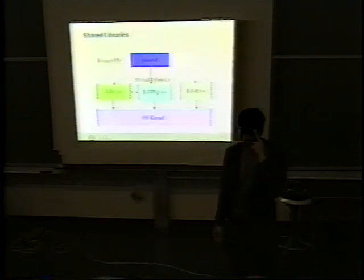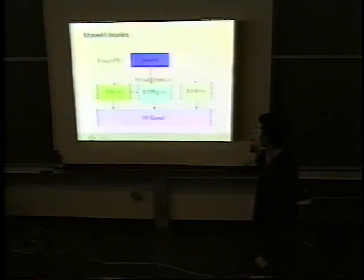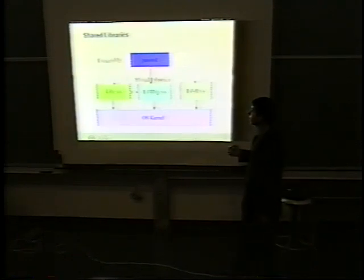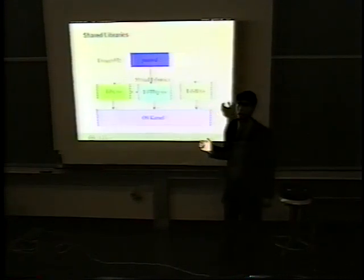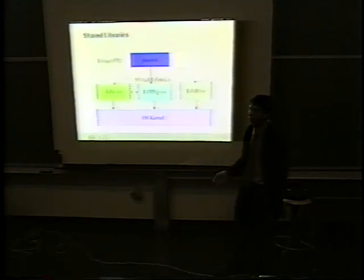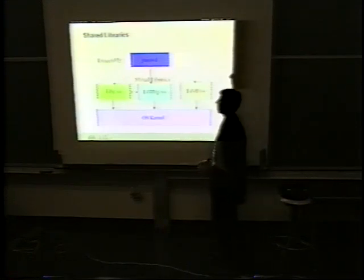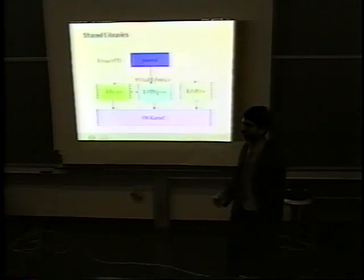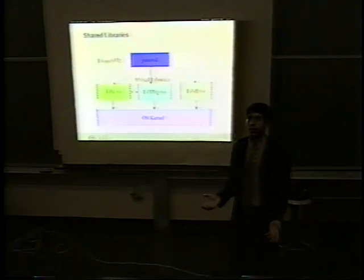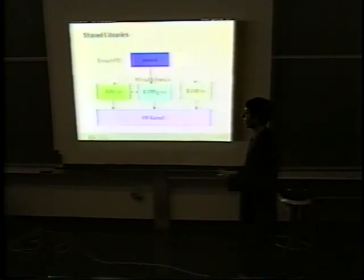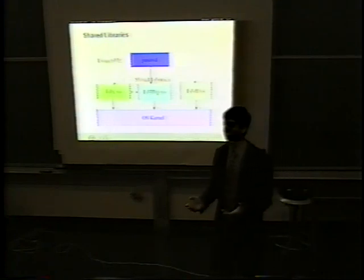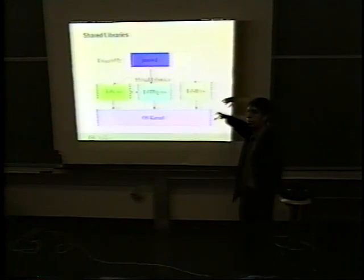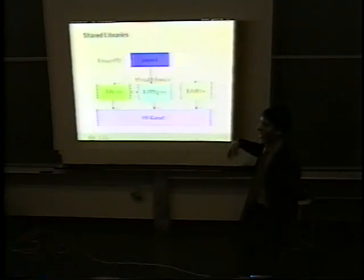Just to refresh on shared libraries — the example here is the password command, but it could be any other setuid program. Password loads several shared libraries: the dynamic link shared library, which handles shared libraries themselves; the LDAP shared library, which allows password to change your password on an LDAP server; and libc, which does almost everything for most Unixes — reading and getting environment variables, writing files, and so on. All of these talk directly to the OS kernel, and password never talks to the kernel directly — it only talks to these libraries. So there's an intermediary layer where all data has to filter through.